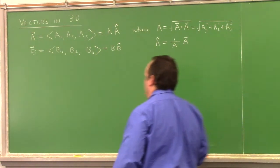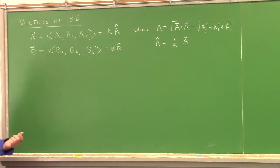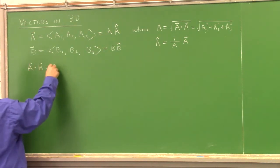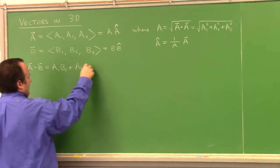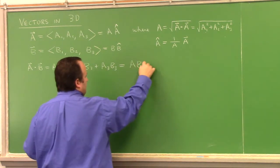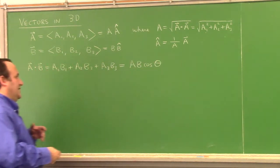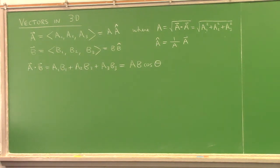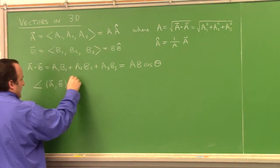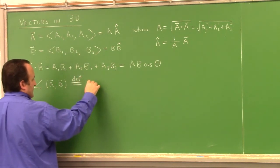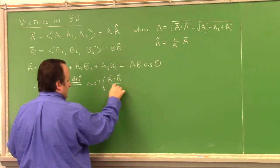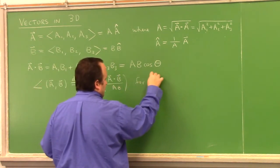We also learned that we can take the dot product of two vectors: a1·b1 + a2·b2 + a3·b3. And we learned that equals the product of their magnitudes times the cosine of the angle between them, so we can calculate the angle between vectors using this.